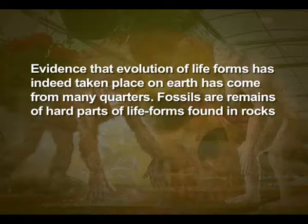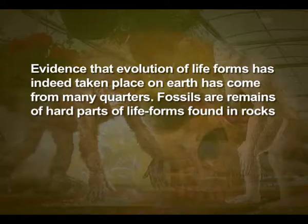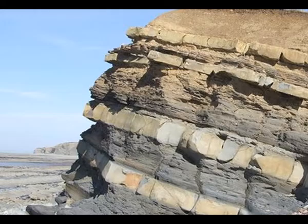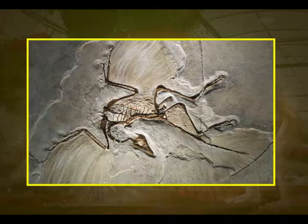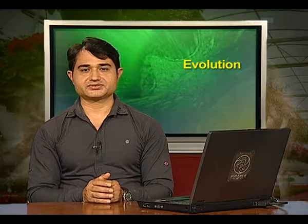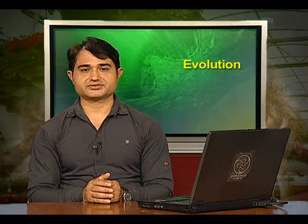Evidence that evolution of life forms has indeed taken place on earth has come from many quarters. Fossils are remains of hard parts of life forms found in rocks. Rocks form from sediments, and a cross section of earth's crust indicates the arrangement of sediments one over the other during the long history of earth. Different aged rock sediments contain fossils of different life forms who probably died during the formation of that particular sediment. Some appear similar to modern organisms; they represent extinct organisms, for example, dinosaurs.